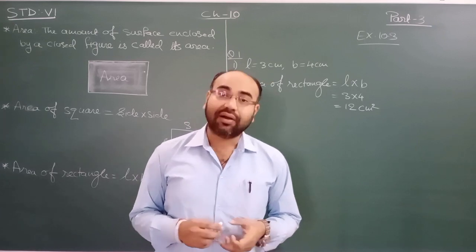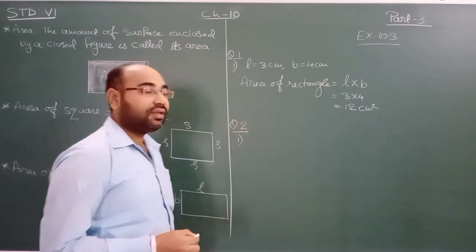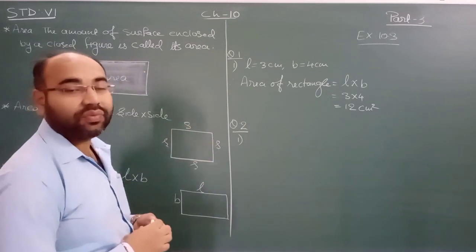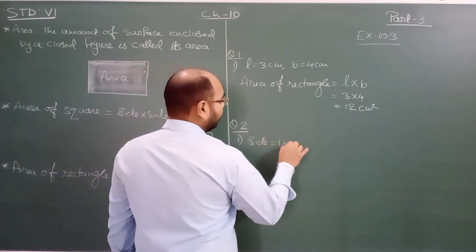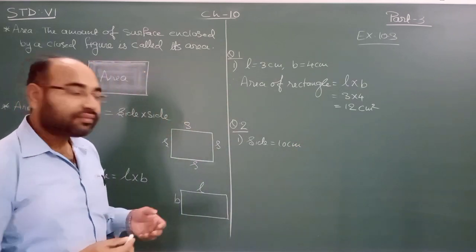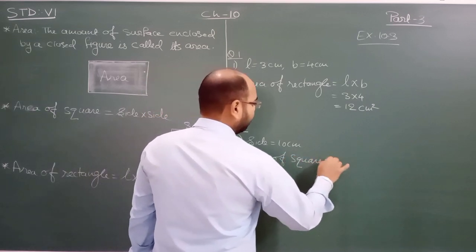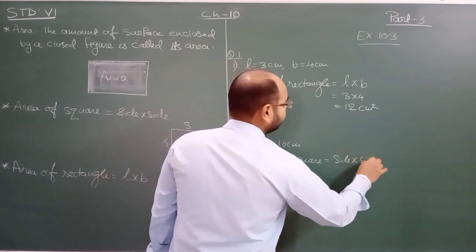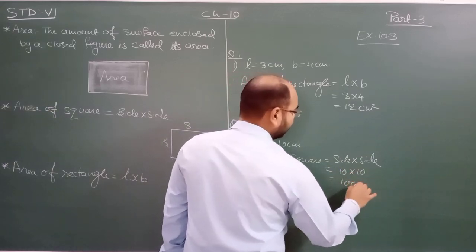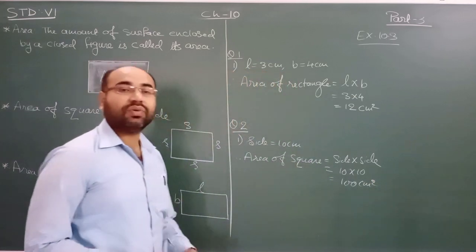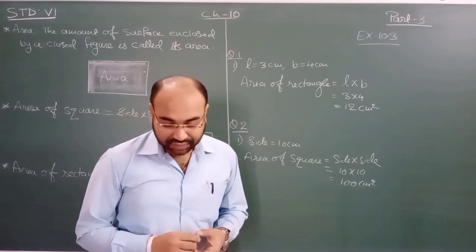Question number two: we have to find the area of a square where four sides are given. In a square all four sides are equal, so we just need one side. The side is 10 centimeters. Area of square equals side into side — 10 into 10 equals 100 centimeter square. That is the area of the given square whose side is 10 centimeters.